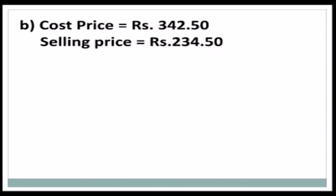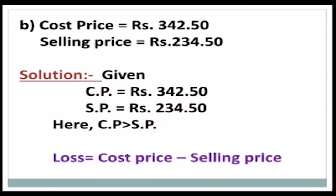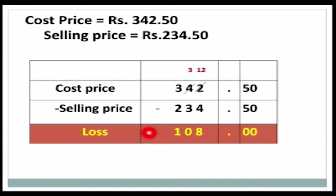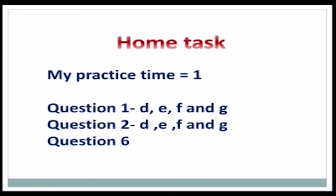Question 2(b): Cost Price = rupees 342 and 50 paise; Selling Price = rupees 234 and 50 paise. CP is greater than SP, so there is a loss. Loss = CP − SP = 342.50 − 234.50. Subtracting: 0 − 0 = 0, 5 − 5 = 0, we cannot subtract 4 from 2, so we borrow: 12 − 4 = 8, then 3 − 3 = 0, 3 − 2 = 1. There is a loss of rupees 108. For home task, students must solve the remaining practice questions in their math notebook.